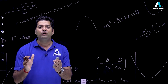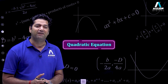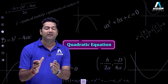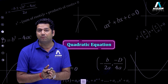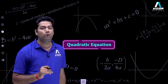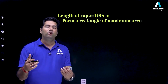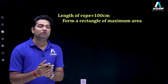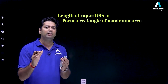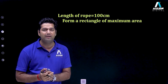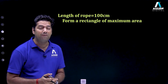Hello students, we are going to learn a very interesting chapter — quadratic equations. Quadratic means degree two, so the maximum power of the variable is equal to two, and equation means it holds an equality sign. To understand the importance of this, I am taking one example. The length of the rope is given as 100 centimeters, and we have to form a rectangle of maximum area.